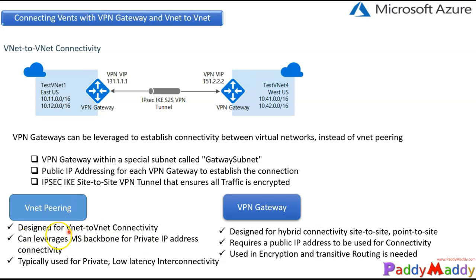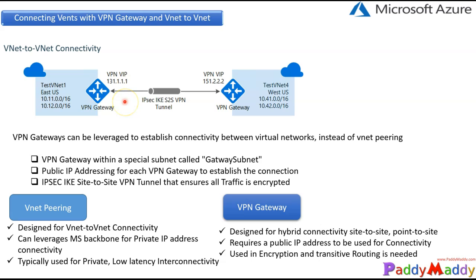When you use VNet peering it is designed for VNet-to-VNet connectivity, whereas VPN gateway is originally designed for hybrid connectivity — site-to-site or point-to-site connection. The key difference for virtual network gateways: if you need compliance or standards requiring transit routing — which is not supported in VNet peering — or if you need encryption, you would fall back to a VPN gateway configuration.